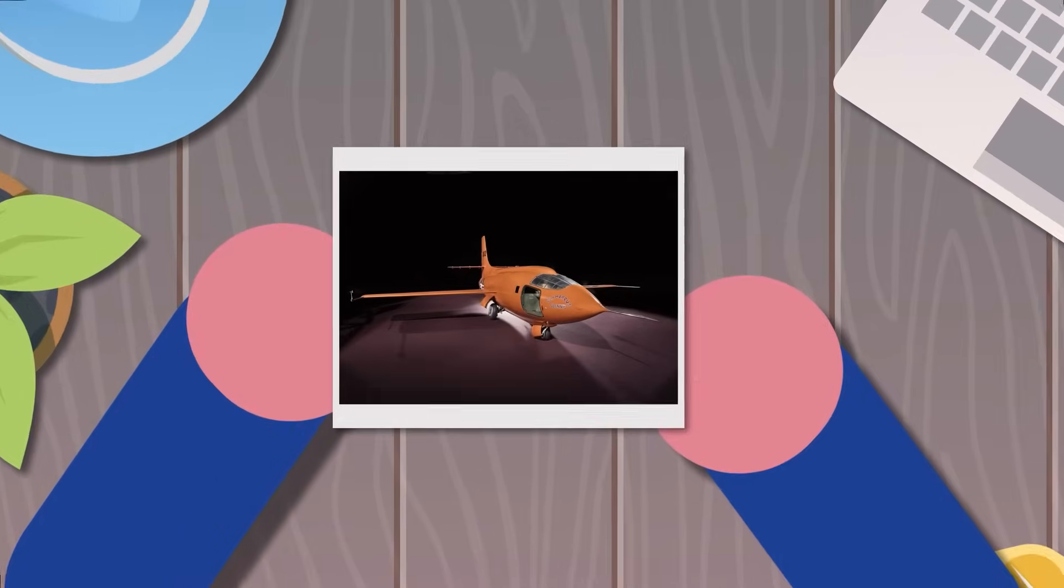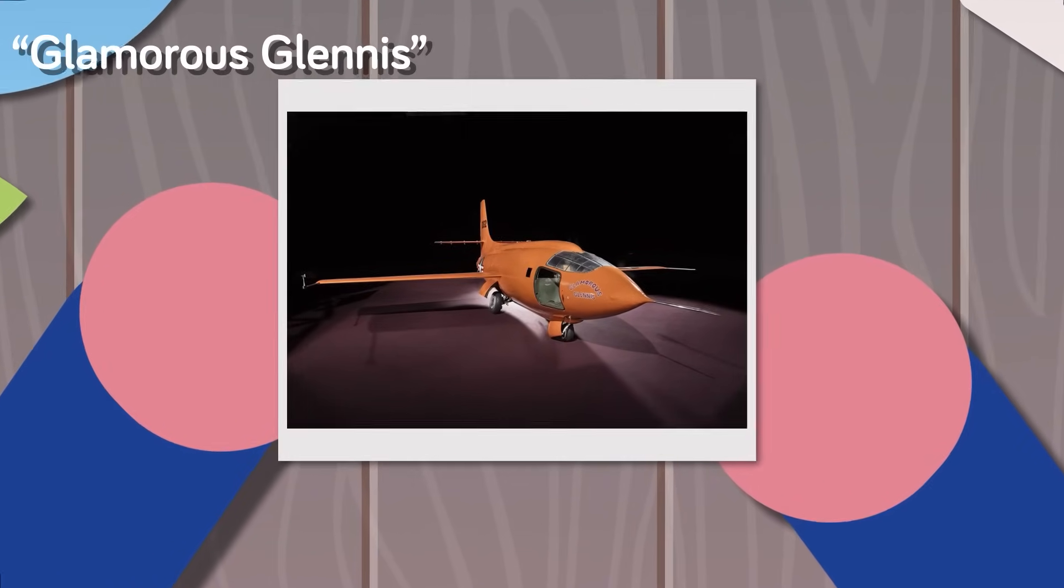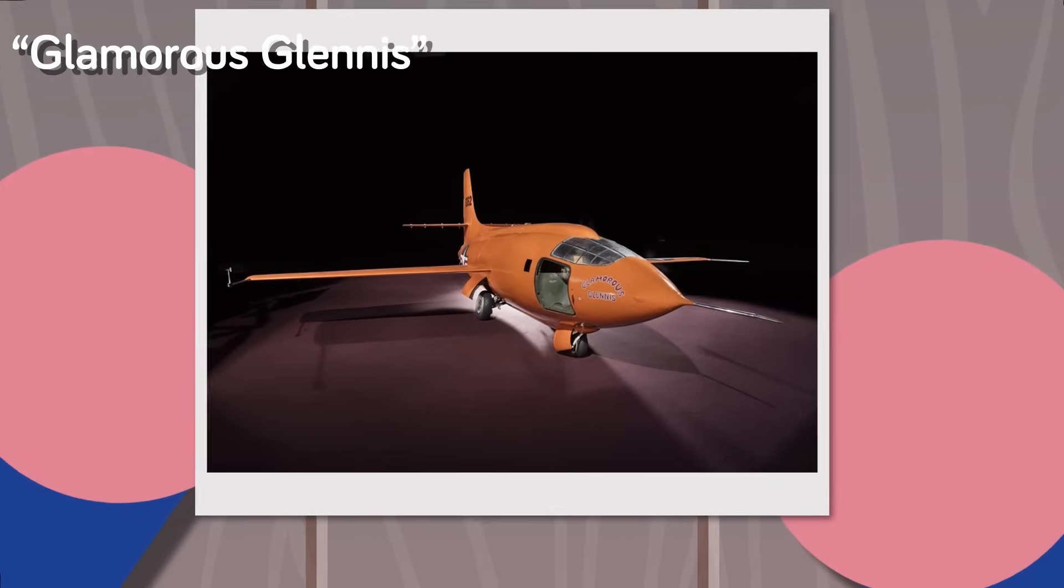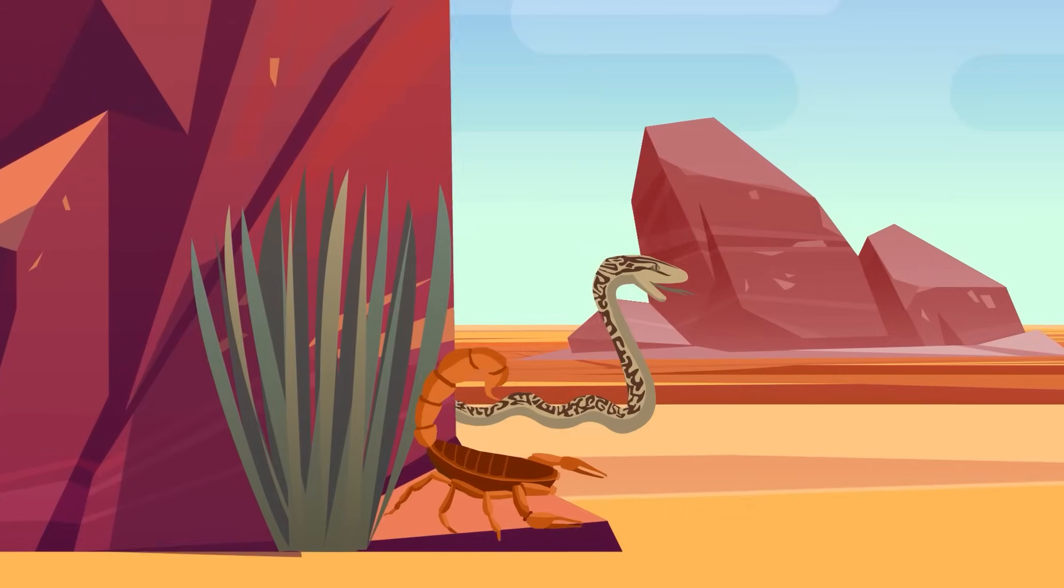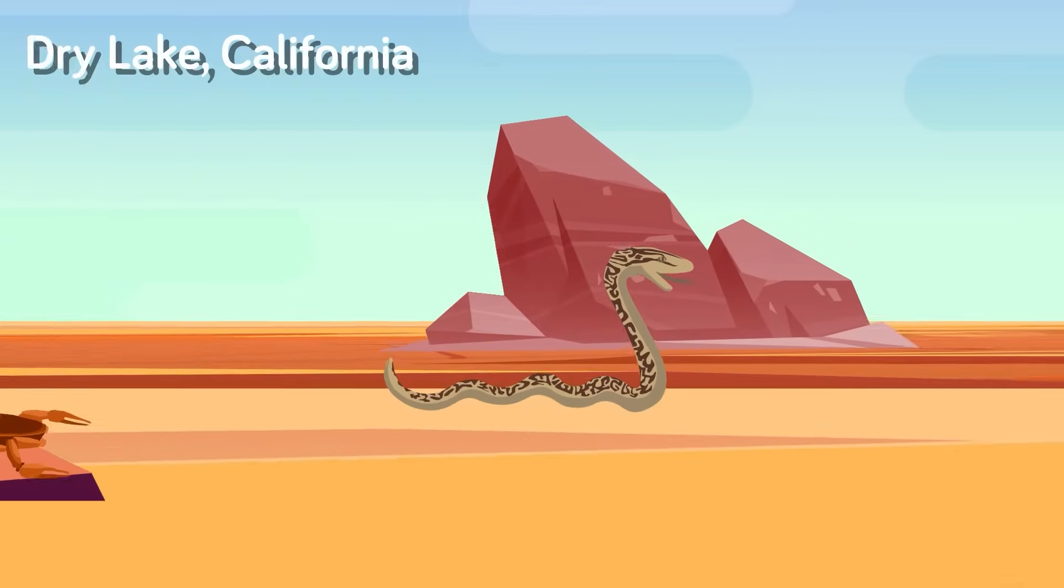On a sunny October day, Chuck Yeager was strapped into his bright orange Bell X-1 aircraft named Glamorous Glennis after his wife. The X-1 was loaded onto a B-29 and flown to an altitude of 25,000 feet above Dry Lake, California.